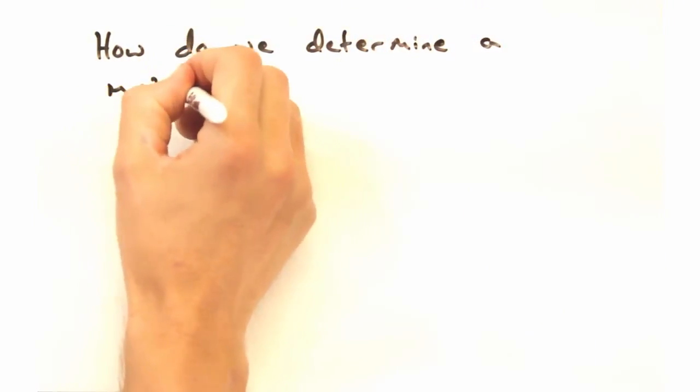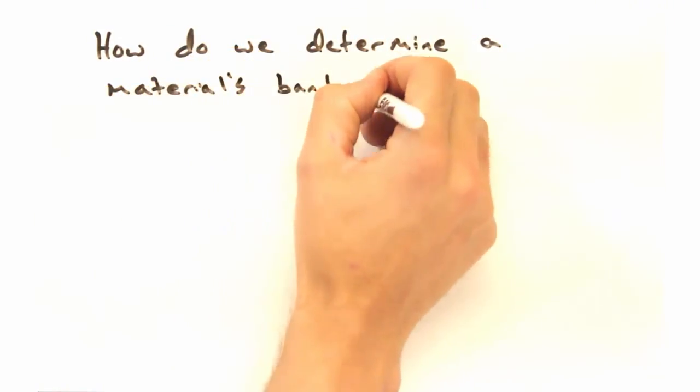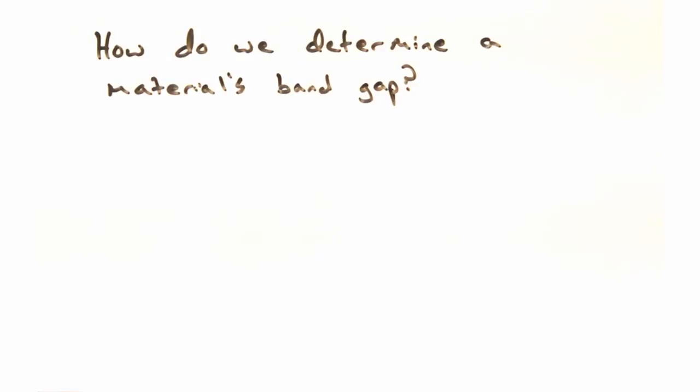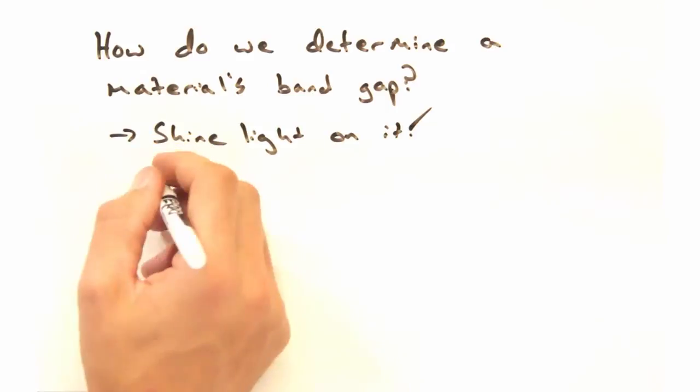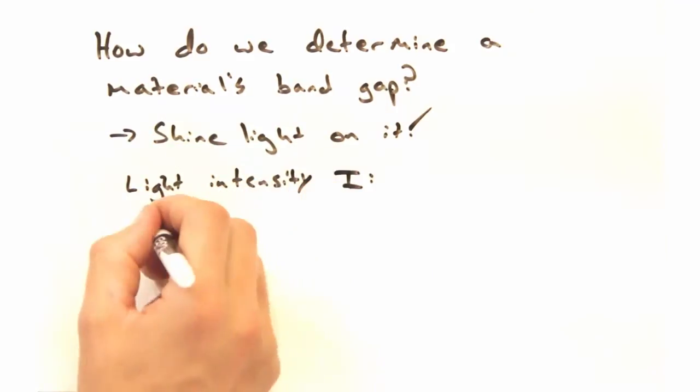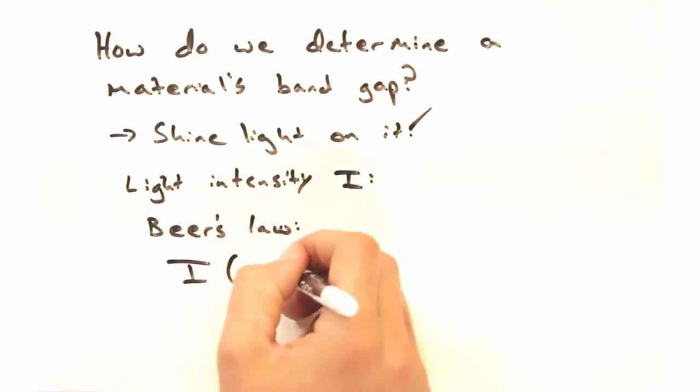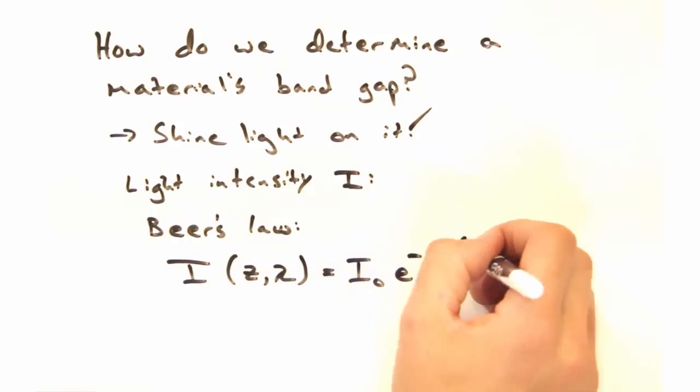This conservation math is all well and good, but how would we be able to tell experimentally what kind of band gap a material has? Well, what do you think? Just shine some light on it, see what it absorbs? Love it. Through the delightfully named Beer's Law, we can go from absorbance to an absorption coefficient as a function of the energy of the incoming light.